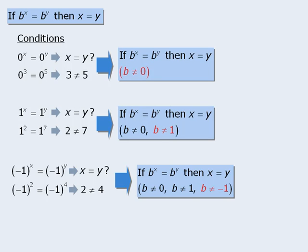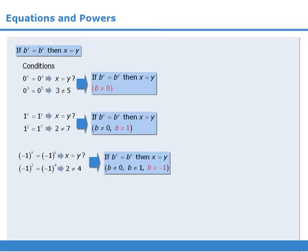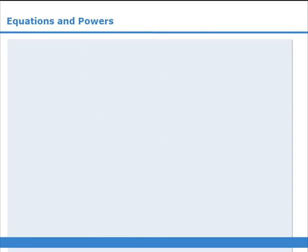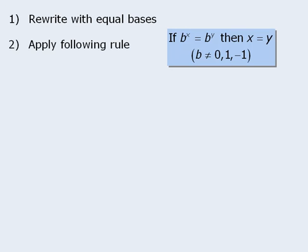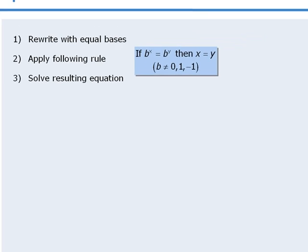In order to apply our rule, we must ensure that the base does not equal 0, 1, or negative 1. In this lesson, we learned how to solve equations with variables in the exponents. To do so: first, rewrite the equation so that both sides have equal bases; then apply the rule that the exponents must be equal; finally, solve the resulting equation.